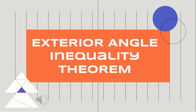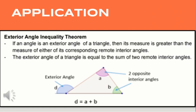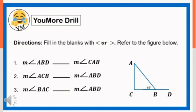The second theorem of triangle inequality is the exterior angle inequality theorem. It states that if an angle is an exterior angle of a triangle, then its measure is greater than the measure of either of its corresponding remote interior angles. The exterior angle of a triangle is equal to the sum of the two remote interior angles. For the given example, angle D is the exterior angle, and the two opposite interior angles are the remote interior angles of angle D. The measure of angle D is equal to angle A plus angle B.